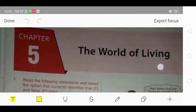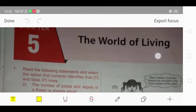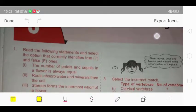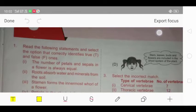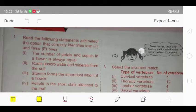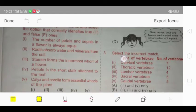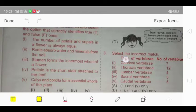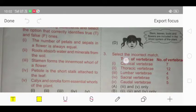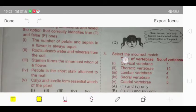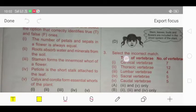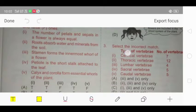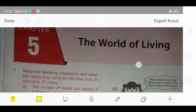Our first question is: read the following statements and select the option that correctly identifies true and false ones. First, the number of petals and sepals in a flower is always equal. Second, roots absorb water and minerals from the soil. Third, stamen forms the innermost whorl of a flower. And petiole is the short stalk attached to the leaf. And calyx and corolla form essential whorls of the plant.